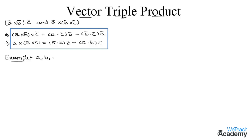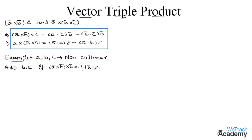a, b, and c are non-zero and non-collinear vectors, and θ ≠ 0 is the angle between b and c. The given condition is: a̅ × (b̅ × c̅) = (1/3)|b̅||c̅|a̅. We have to find the value of sin θ. Let us consider the angle between b and c as θ, and mark this as equation one.